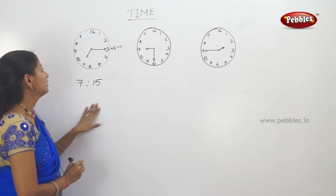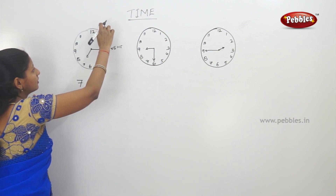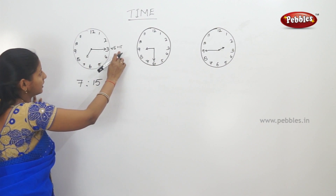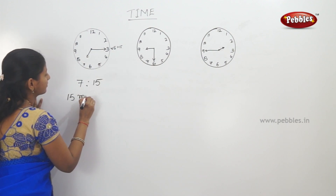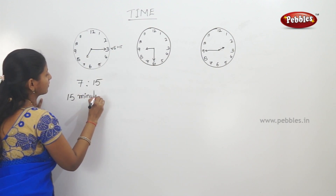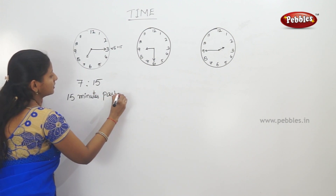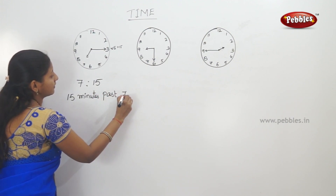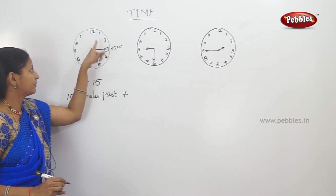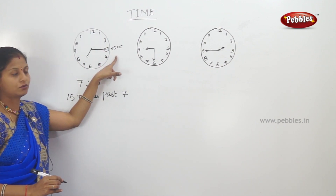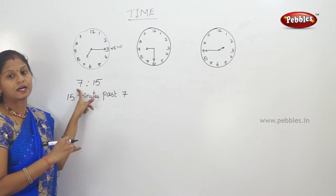Ok. If you have 7 hours, how many minutes do you have? 15 minutes is complete. This is the same — 15 minutes past 7. That means 15 minutes is complete. 15 minutes past 7.